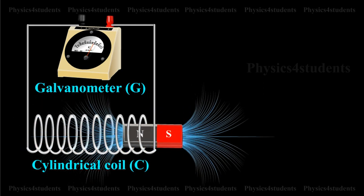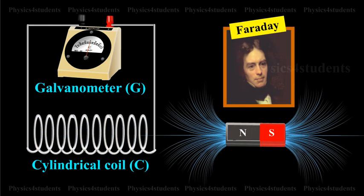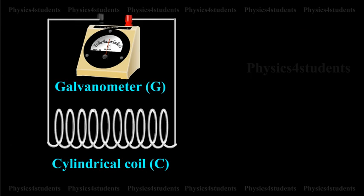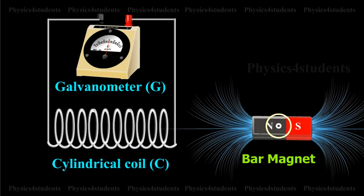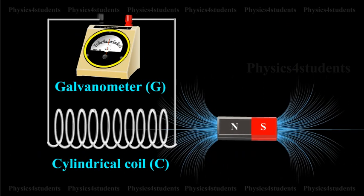The following inferences were made by Faraday. Whenever there is a relative motion between the coil and the magnet, the galvanometer shows deflection indicating the flow of induced current.